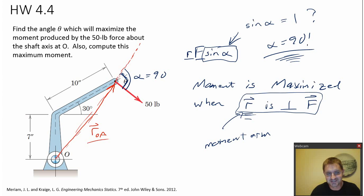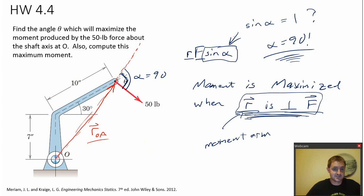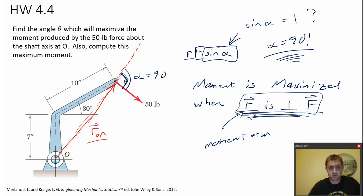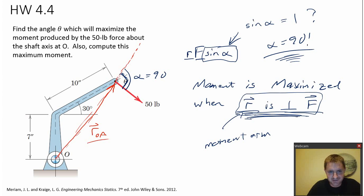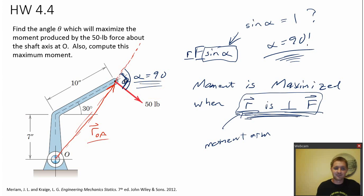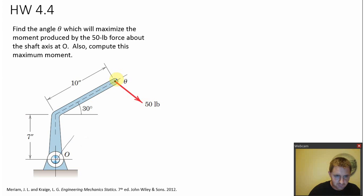We're pretty much done with the theory of the problem. I want R to be perpendicular to F — that's when the moment is maximized. From here, it's just trigonometry. So let's find the angle theta when alpha is 90 degrees. What do we know? From here it's just trigonometry.